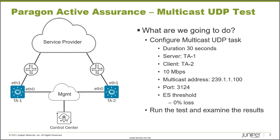When this task starts, TA1 — the server — generates multicast traffic towards the destination multicast address 239.1.1.100. Then TA2, the client, tries to join that multicast address. If TA2 is successful at joining, metrics like one-way delay, jitter, packet loss, and packet misorderings are recorded, and we'll see that in the results.